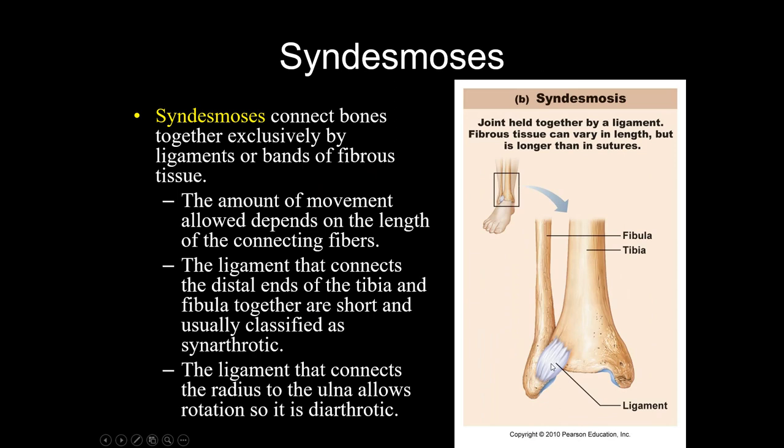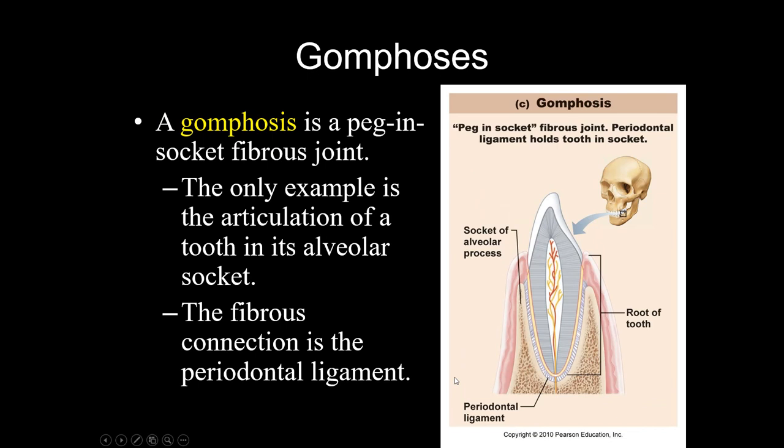A syndesmosis is when you have a little ligament that connects a couple of bones together, like between the tibia and the fibula. Depending on the length of those fibers you might get a little movement, making it amphiarthrotic, but if the fibers are really short there's no movement so it can be synarthrotic as well. Your last option is a gomphosis — this is how teeth get held into either the maxilla or the mandible. Your teeth shouldn't be moving, so these are synarthrotic joints.